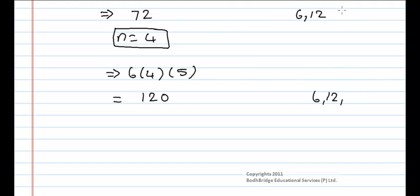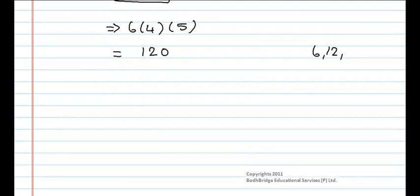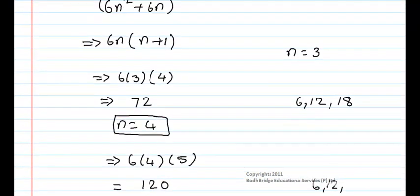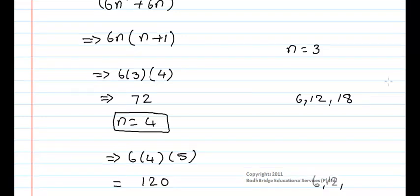But whereas 72 is divisible with 6, 12 and 18. So if you continue like this, for n equals 5, 6, 7, 8, 9 and so on, it is always divisible with only 6 and 12. In some cases it is divisible with 18.